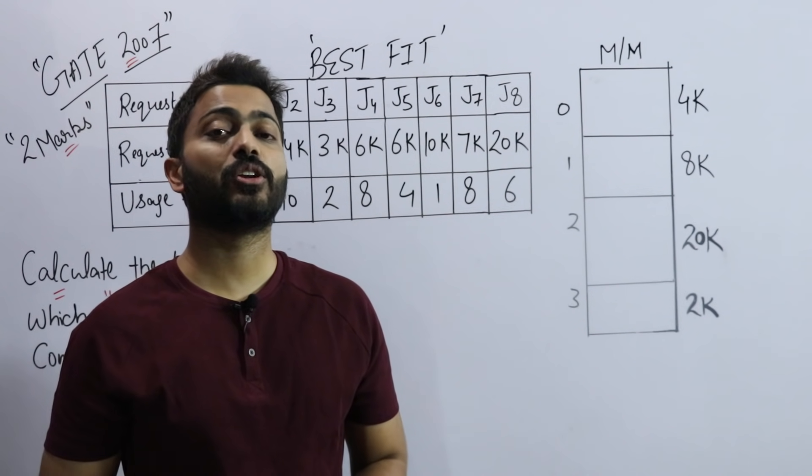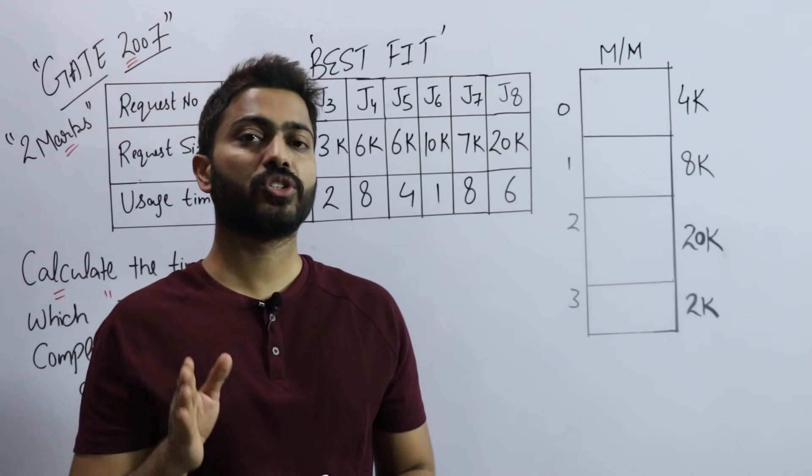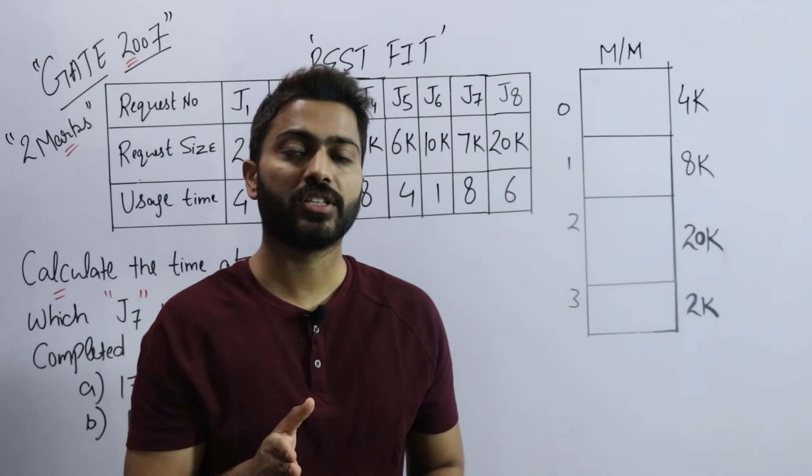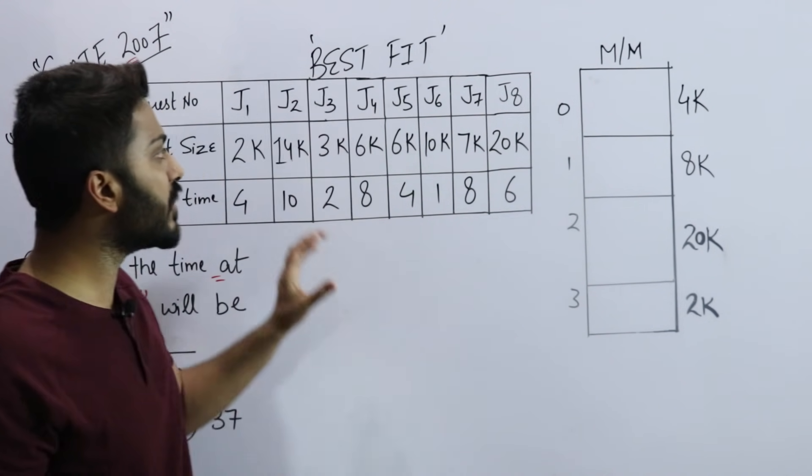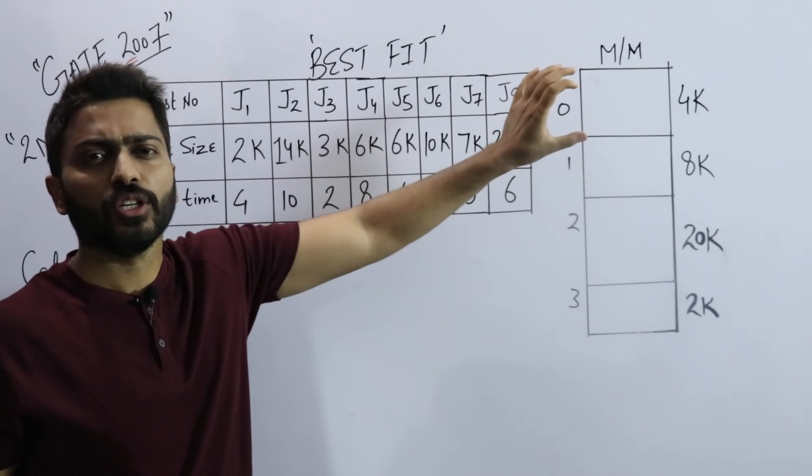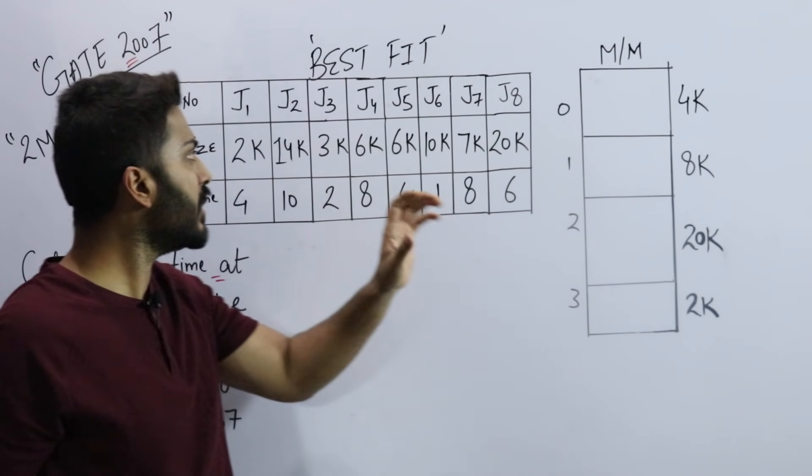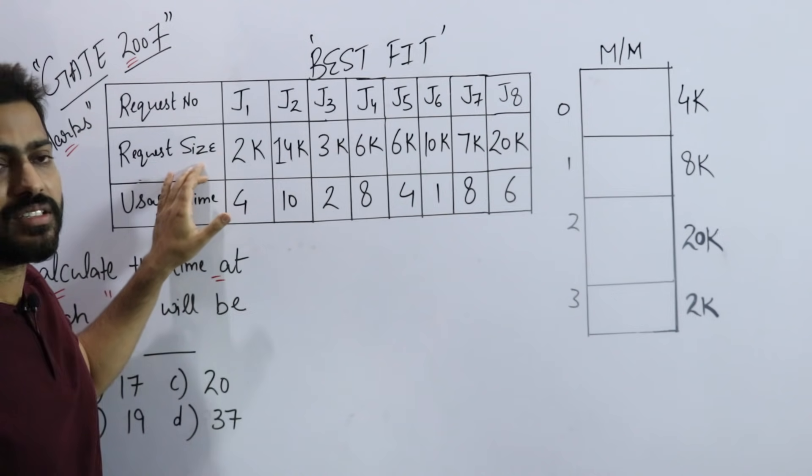The question is asked in GATE 2007 for two marks. The question is on memory allocation - how we are allocating memory to the processes. Here we have given eight jobs, which means processes, and their request size.